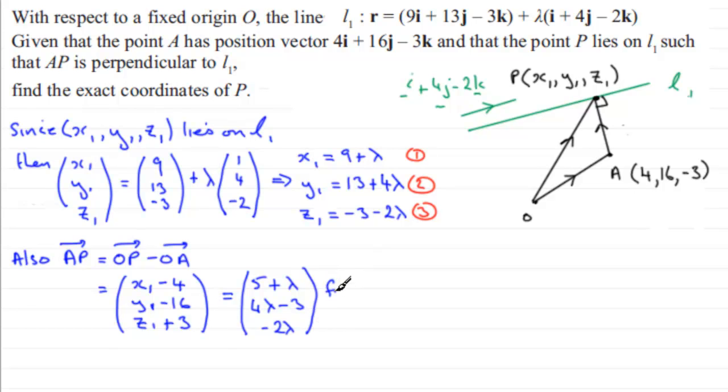Now, we've got our vector A to P. And I said that this vector dotted with A to P would equal 0. The perpendicular rule for vectors. So let's just put this in here. But if we take that vector i plus 4j minus 2k, and we dot this vector with A to P, it's going to equal 0. So in the usual way, if we dot these two vectors, we've got 1 multiplied by 5 plus lambda. Plus, then we've got 4 here, multiplied by 4 lambda minus 3. 4 times 4 lambda minus 3.